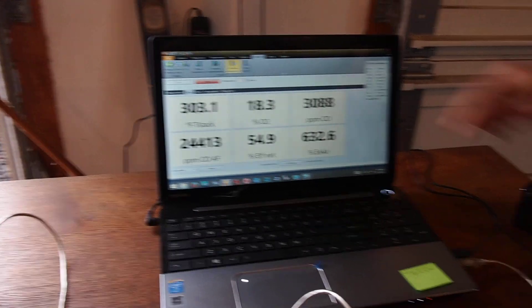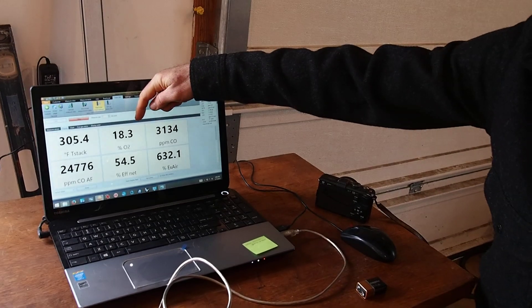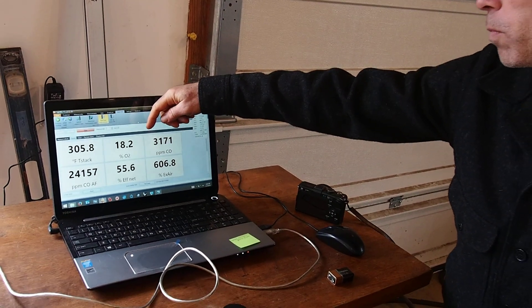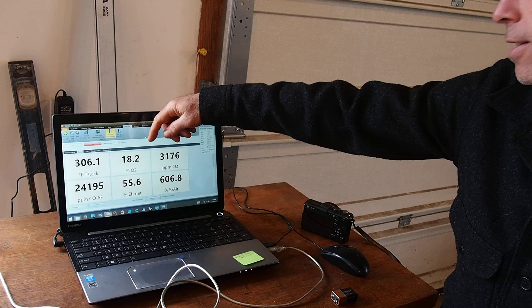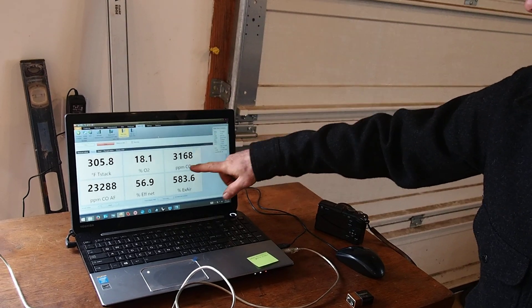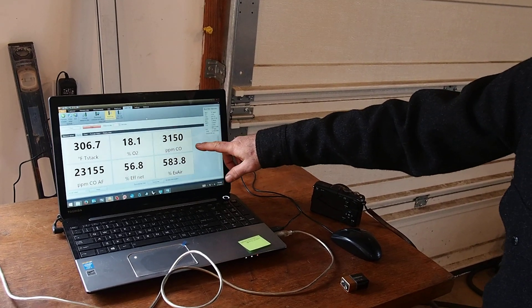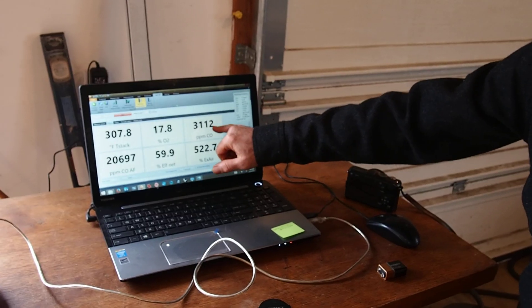Yeah, we'll see the oxygen starts to come down as the wood gas starts to pyrolyze and enter the burn chamber. This is the parts per million of carbon monoxide and that should spike right now, but we're dropping.